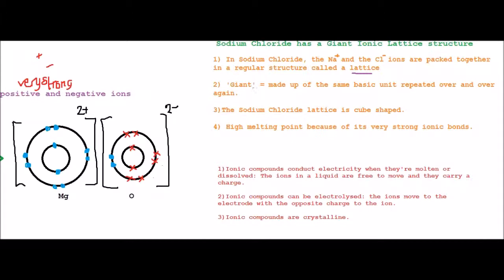It's called giant because it's made up of the same basic unit repeated over and over again. So there's lots and lots and lots of these Na and Cl ions that are repeated again and again and again. So it's called giant.